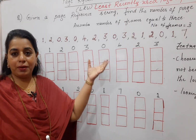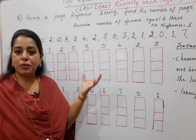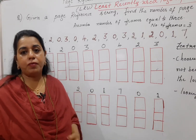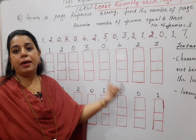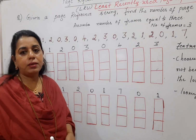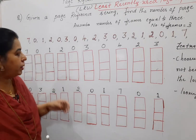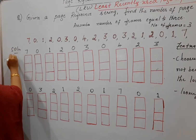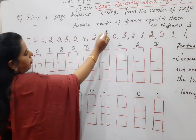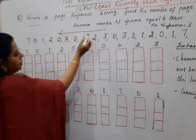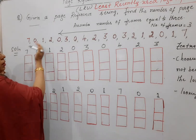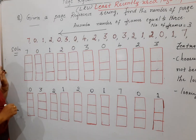For this algorithm we are using the same reference string, which consists of 20 page numbers. The problem asks you to determine the number of page faults. We sketch physical memory consisting of three frames for each page number. For LRU, you look in the backward direction — simply think of it as looking backward in time — then use that logic to replace the page.